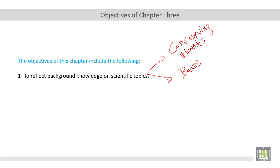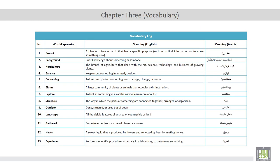Before we proceed with this chapter, let's take a look at the vocabulary log. The vocabulary log includes words like: project, background, horticulture, balance, conserving, biome, explore, structure, outdoor, landscape, gathered, nectar, and experiment.